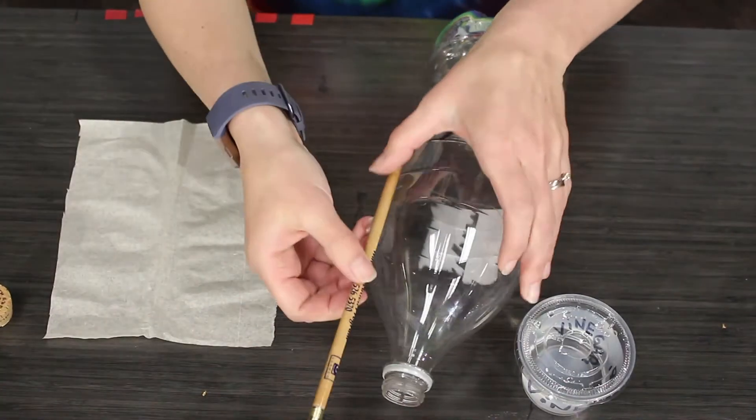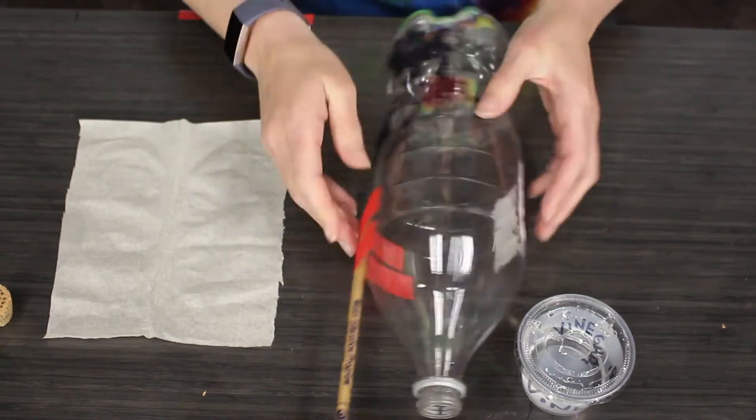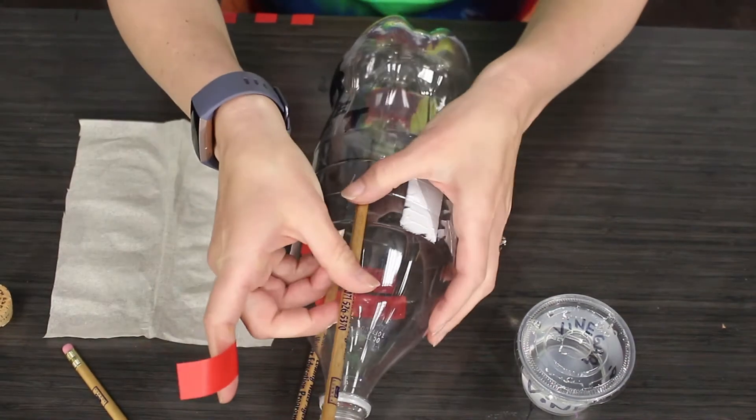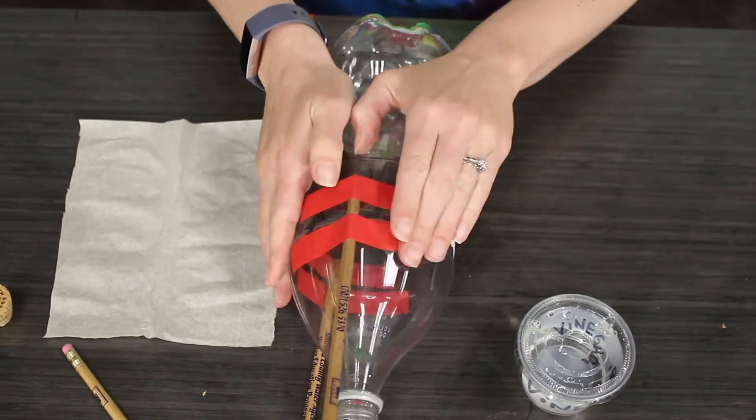Alright, for the main activity we're going to take our tape and attach the pencils to the edge of the rocket. The open end of your bottle faces towards the ground.